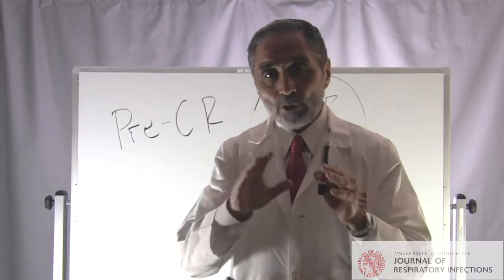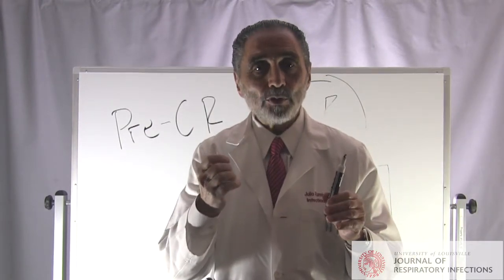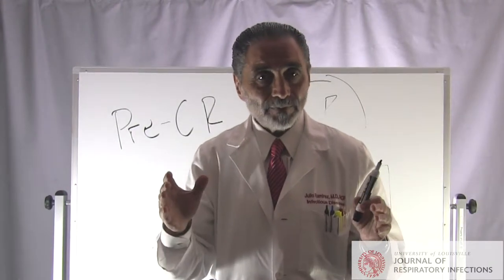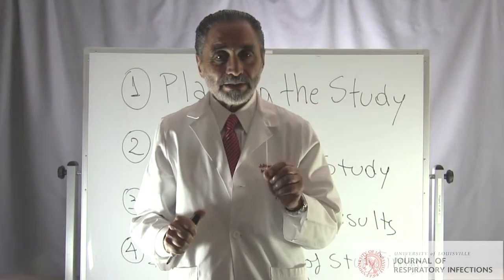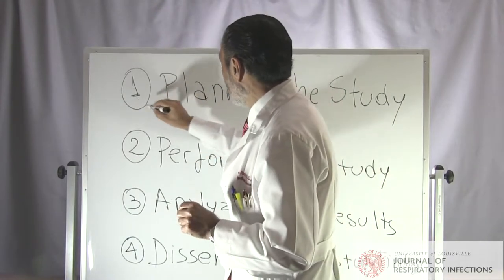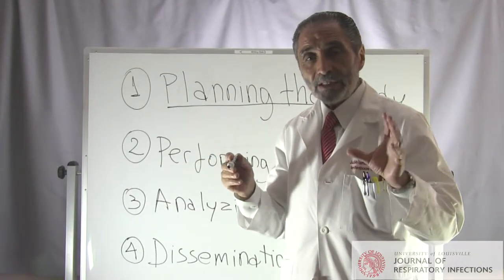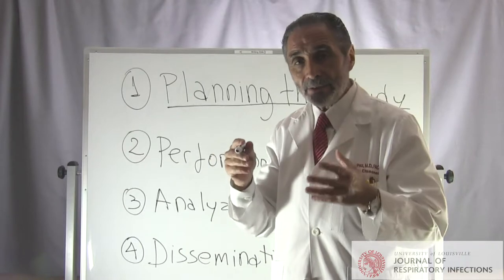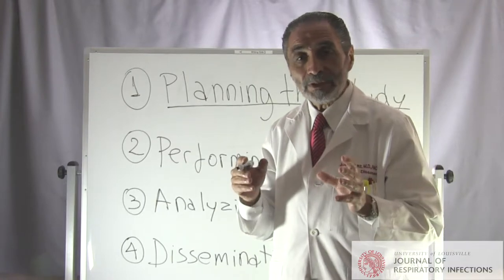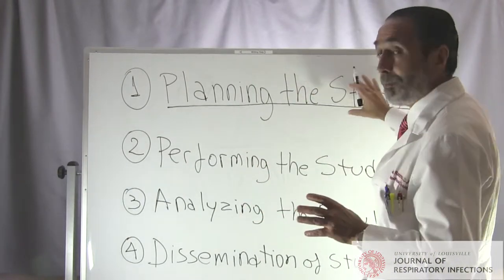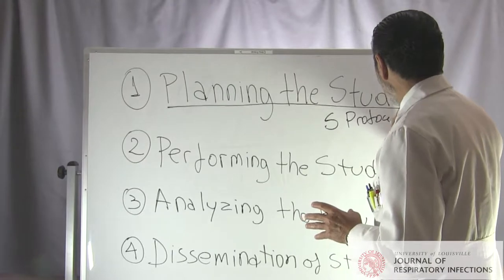We can simplify all the processes of clinical research into four steps, and we will discuss each one in this 15-minute presentation. Step one is planning the study. During this step, we start with an idea, we develop a research question, and we produce all the different study documents. The primary outcome of planning the study is the study protocol.